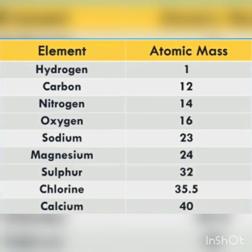Here are the atomic masses of some key elements: hydrogen is 1, carbon is 12, nitrogen is 14, oxygen is 16, sodium is 23, magnesium is 24, sulfur is 32, chlorine is 35.5, and calcium is 40. These are the atomic masses of some important elements, and we need to memorize them.